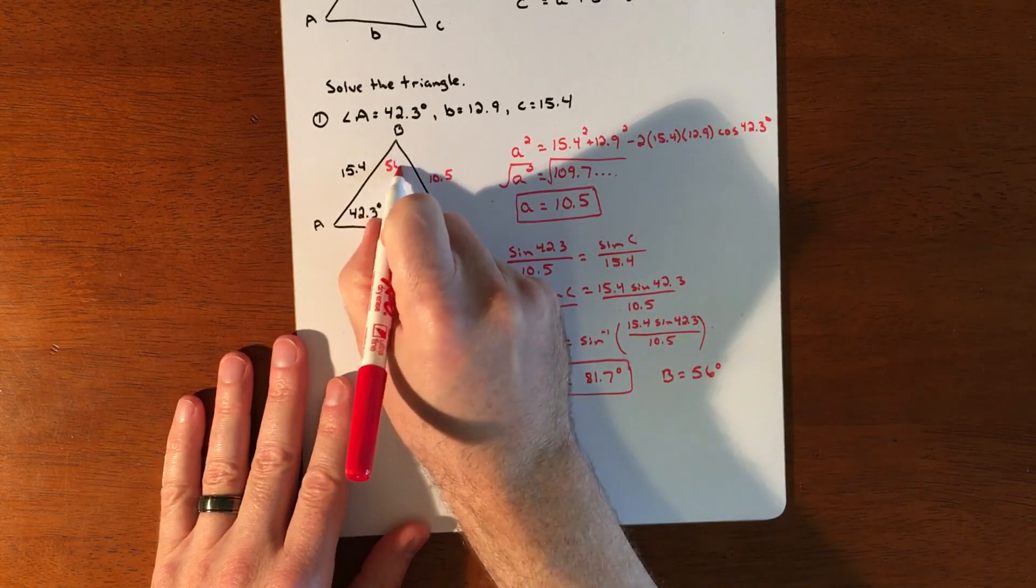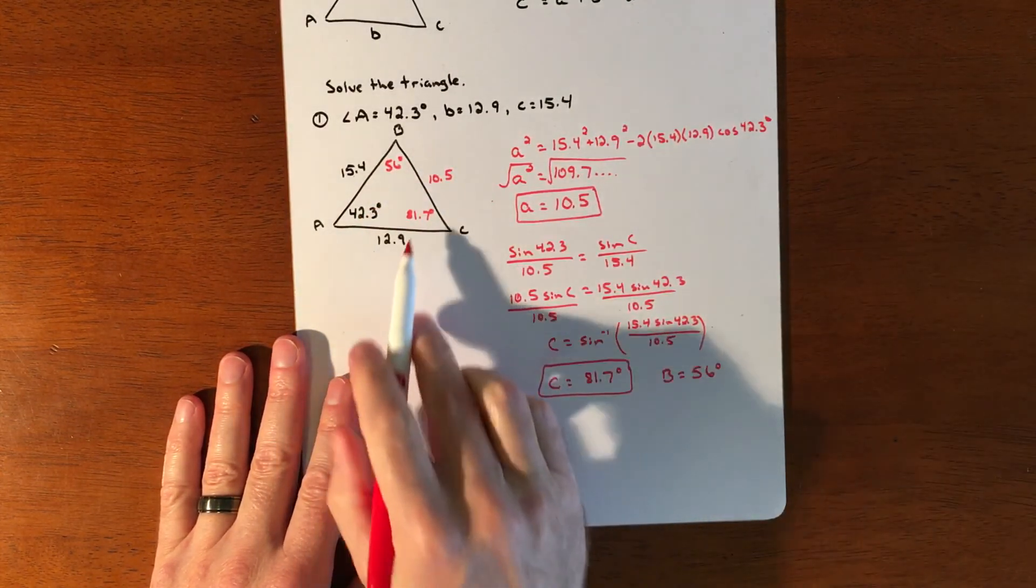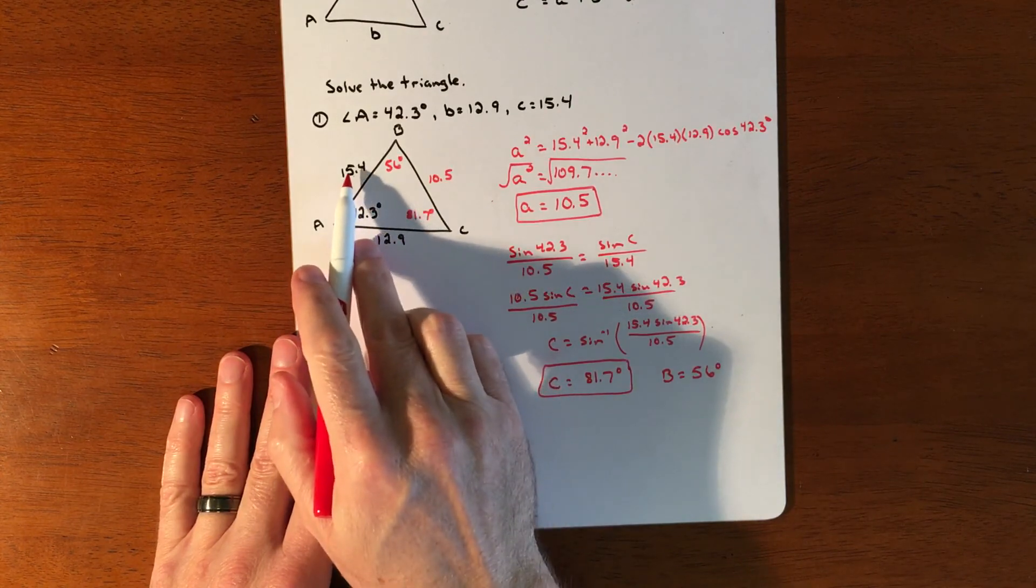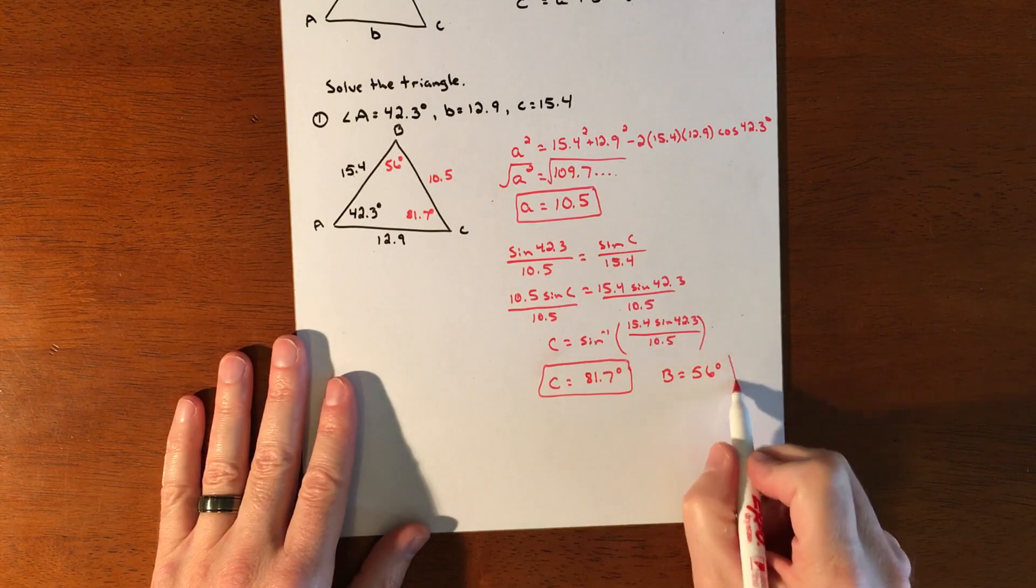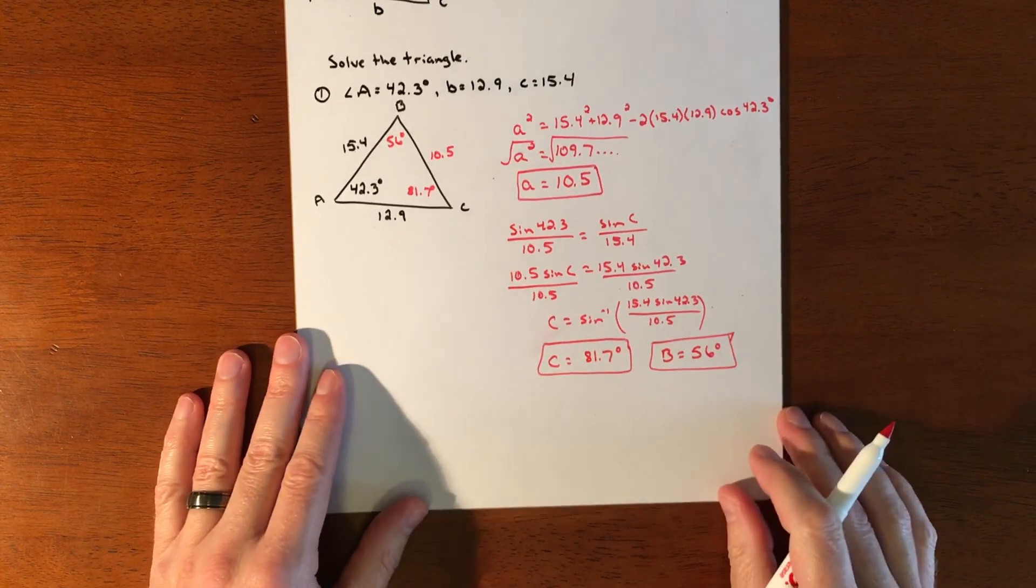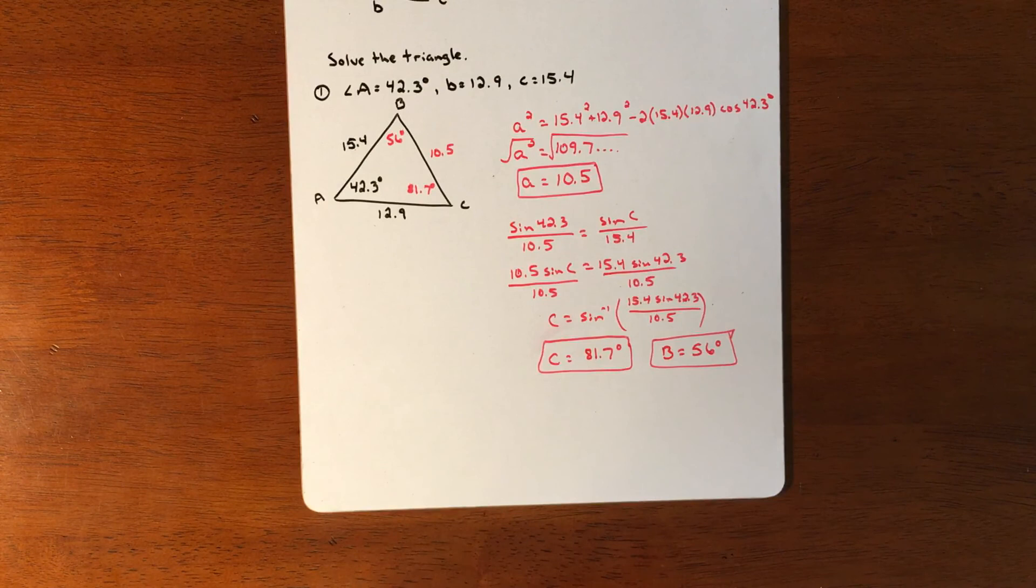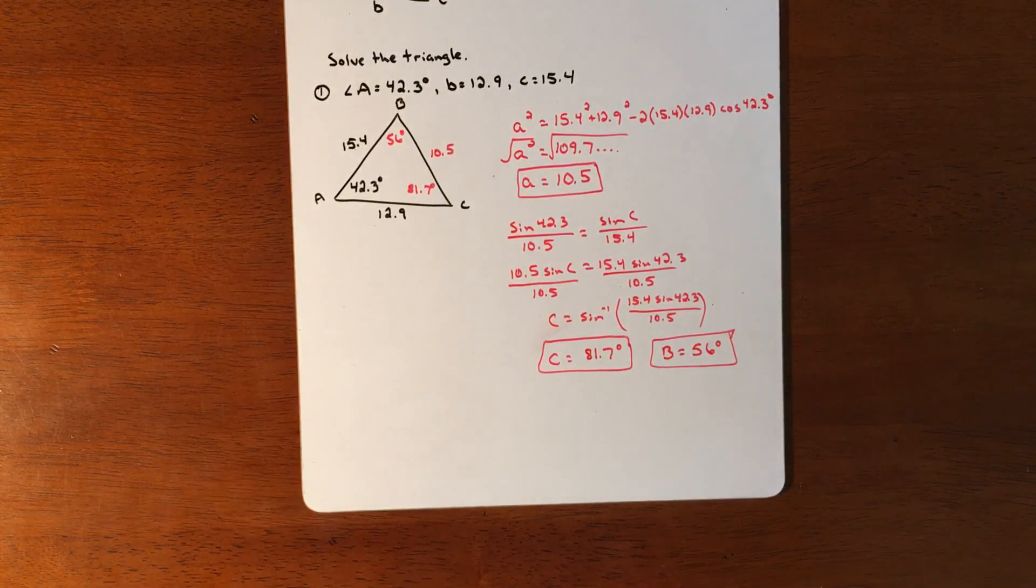So then just a real quick spot check to make sure things feel okay. Biggest angle should be across from the biggest side. Smallest angle should be across from the smallest side. And since those things line up, there's a good chance that we did this right. So that was one problem of Law of Cosines. We'll do one more and then a word problem.